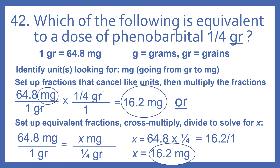Or we can do this by setting up equivalent fractions, cross-multiplying, then dividing to solve for x. So 64.8 milligrams per one grain equals x milligrams per one-fourth grain. 64.8 times one-fourth is 16.2, then divided by one equals 16.2 milligrams.